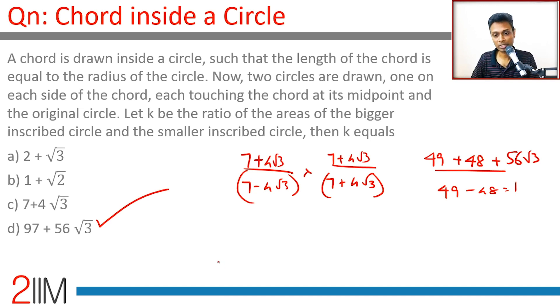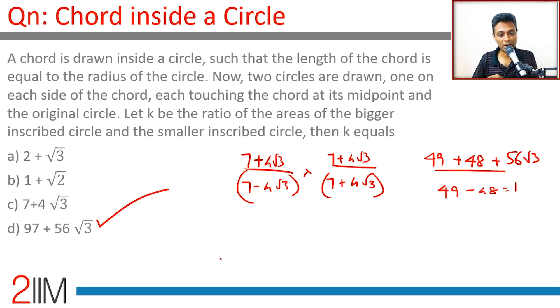What a beautiful question! The key insight is that the ratio of areas equals the ratio of the radii squared, or equivalently the ratio of diameters squared. Once you recognize that the middle triangle OAB is equilateral, all the remaining pieces fall into place.